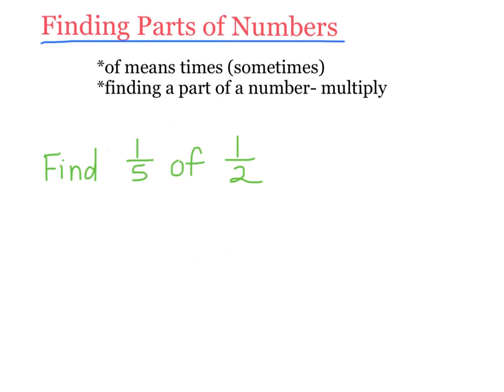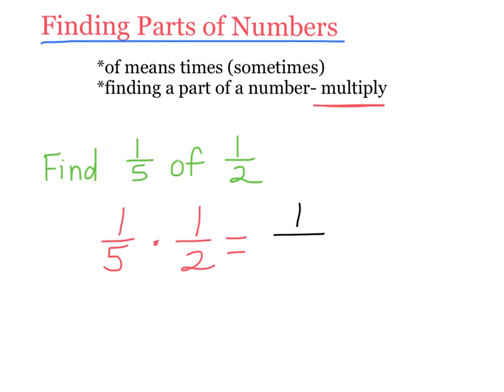In this one I'm still finding a part of a number. It says find a fifth of a half. Whenever you see a part of a number, you can multiply — that's the key word. So all I need to do is 1 fifth times 1 half. Going straight across: 1 times 1 is 1, and 5 times 2 is 10. So my answer is 1 tenth.